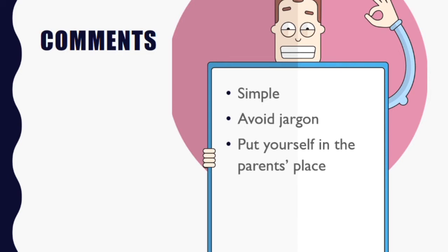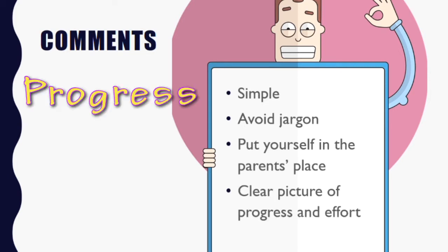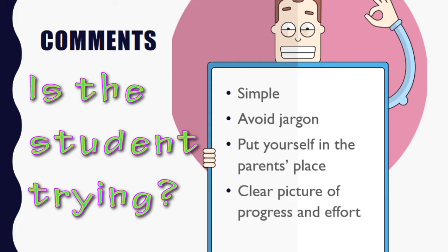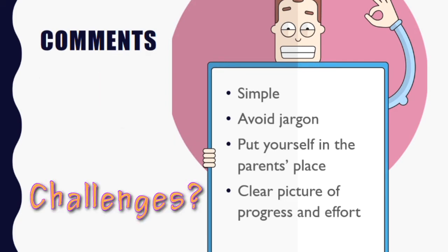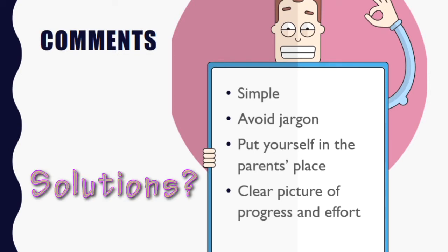I believe that translates to three things. Firstly, how has my child progressed in relation to expectations? Two, are they making an effort? And three, are there any problems we should know about? And going on from point three, how can these difficulties be addressed?